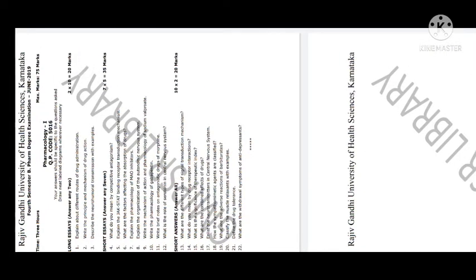Now let's discuss the five-mark short questions. What do you mean by competitive antagonism? Explain the JAT-STAT binding receptor transduction mechanism. Write the factors affecting the absorption of drugs. Explain the pharmacology of MAO inhibitors. Explain the organization of the autonomic nervous system. Write the mechanism of action and pharmacology of sodium valproate — a CNS drug.